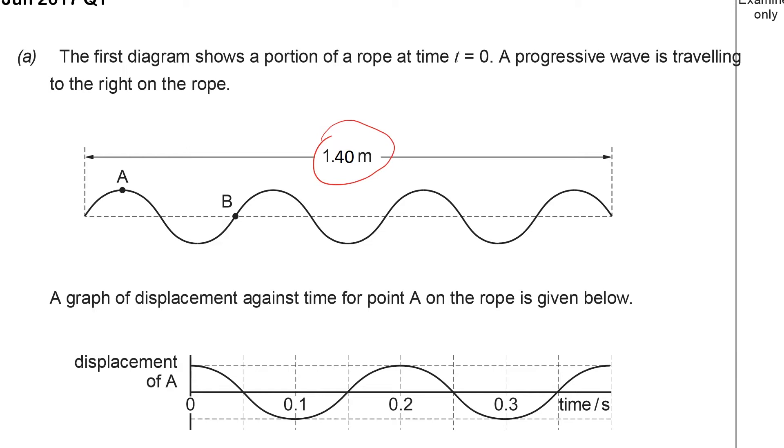But to start with, we're given a displacement-time graph for point A on the wave and we're asked to draw a similar graph for point B on the wave. Now point B starts in the equilibrium position and as the wave is traveling from left to right, this trough to the left of B will cause B to first of all move downwards before oscillating upwards and completing a couple of cycles very similar to diagram A.